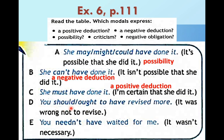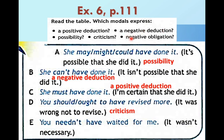You should / ought to have revised more. Глагол should может выступать не только как совет, но и как критика. For example: you should be more patient — тебе следовало бы быть более терпеливым. You should have revised more — это criticism. You needn't have waited for me — needn't означает отсутствие необходимости. It wasn't necessary. So it's negative obligation.